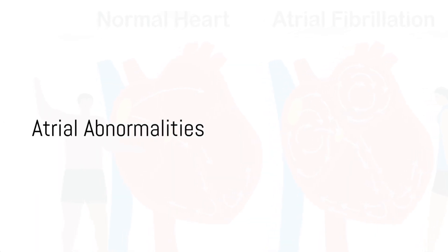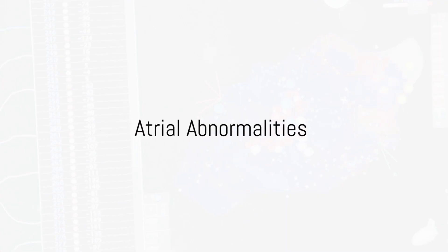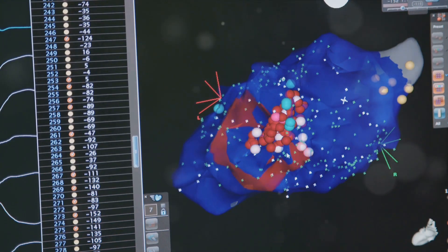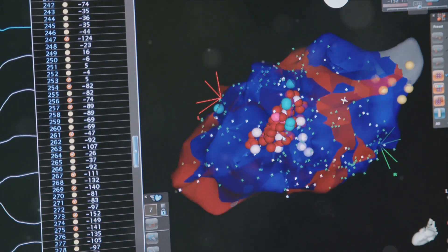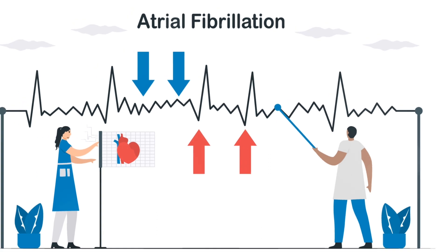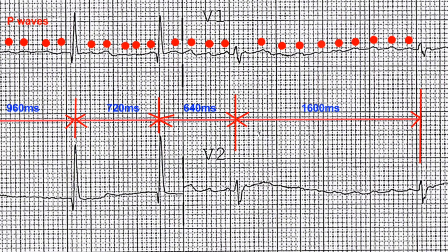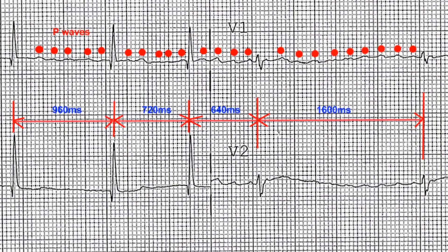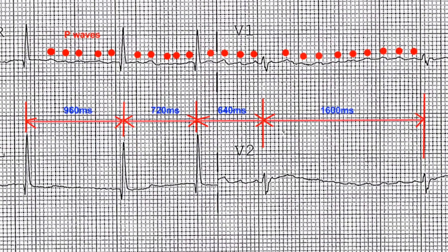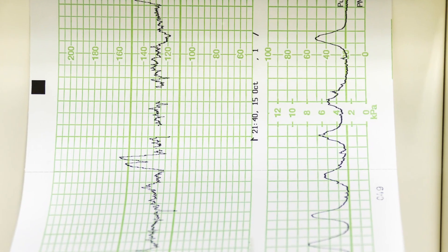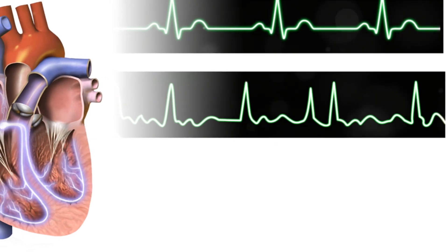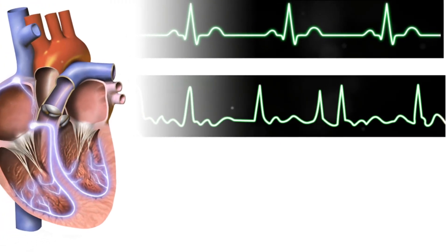Atrial abnormalities encompass a range of conditions that affect the upper chambers of the heart, including atrial fibrillation and atrial flutter. Atrial fibrillation is characterized by rapid and irregular electrical activity in the atria, leading to a rapid and irregular heart rate. This irregularity is reflected on an EKG as irregularly irregular narrow QRS complexes with fibrillatory or F waves.